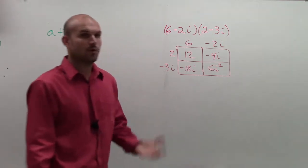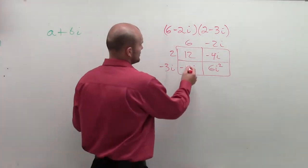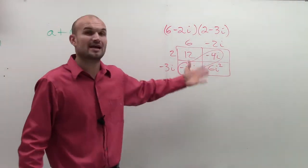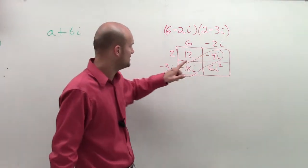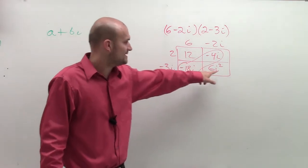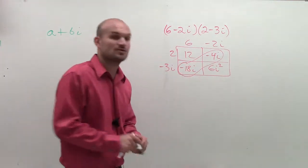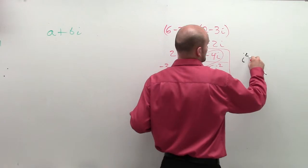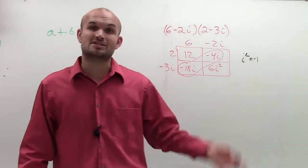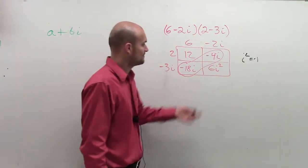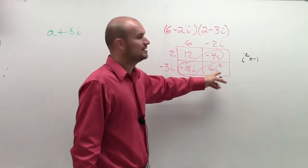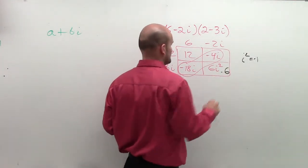Now it's important to remember a couple of key points. When doing the rectangle, you'll notice you can combine common terms: negative 18i minus 4i gives negative 22i. Then we need to remember that i squared equals negative 1, since i represents the square root of negative 1. So I can rewrite i squared as negative 1, making 6 times negative 1 equal to negative 6.